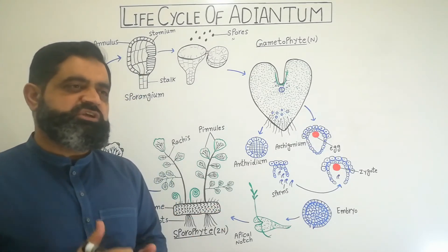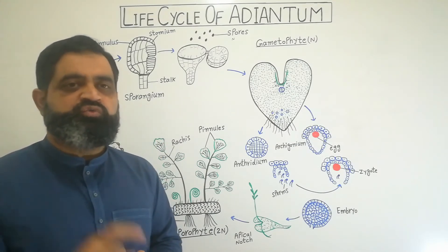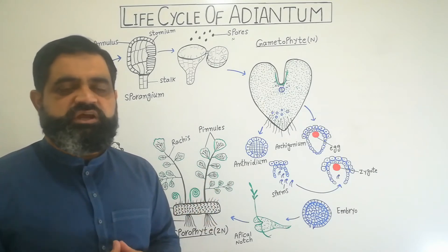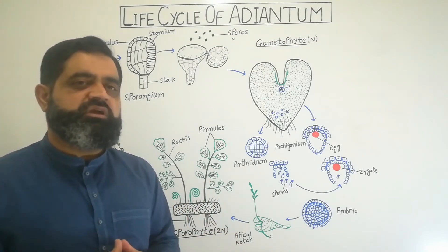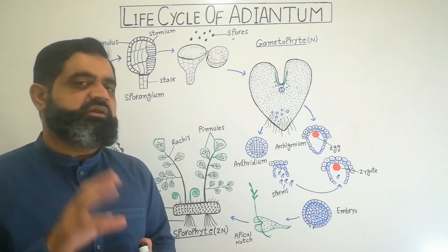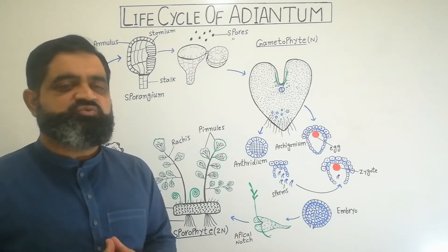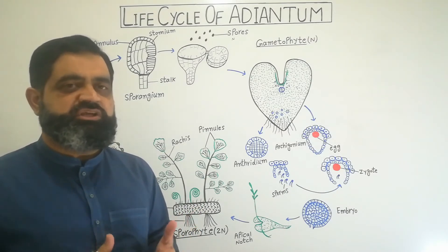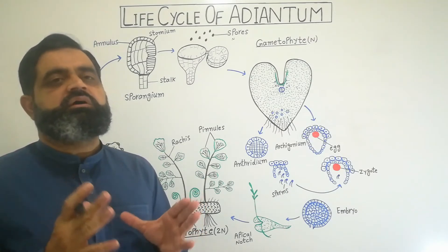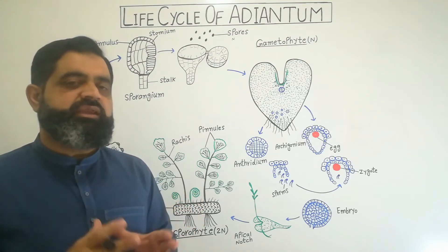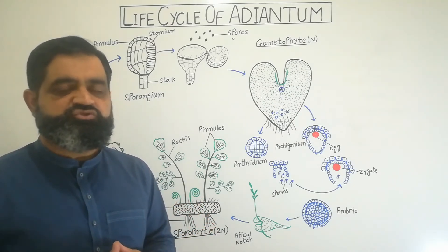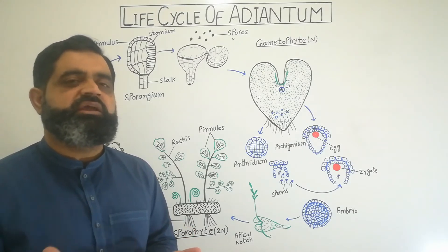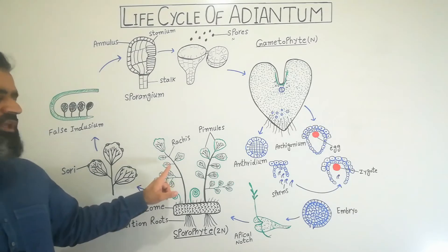When you are standing beside a stream and look around, you will see it looks like a maiden sitting beside the bank of a stream, with her hair waving in the air. Because the rachis and main stem are black and shiny, they look like the waving hair of a maiden sitting just beside the stream. That is why this fern is known as maidenhair fern.